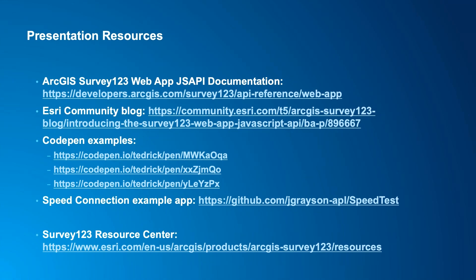Question: Is the API available to install from NPM like the ArcGIS API for JavaScript instead of using it from the CDN? It is available with the Survey123 local website installer via MyESRI, primarily designed for organizations with firewall restrictions against using external resources with ArcGIS Enterprise. We don't have a separate NPM install at this point in time, but if there's interest in that, we'd love to hear about it to consider in the future.